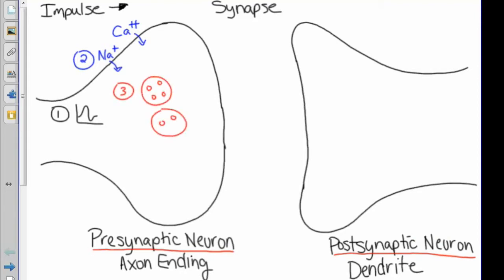Calcium causes synaptic vesicles, number three, to merge with the cell membrane and release their contents, neurotransmitters, or in this case, acetylcholine.